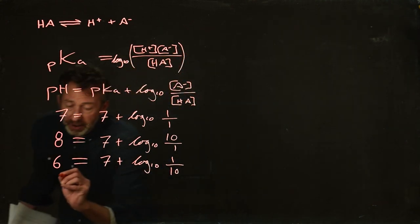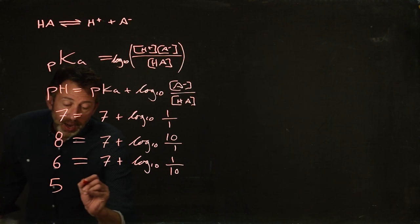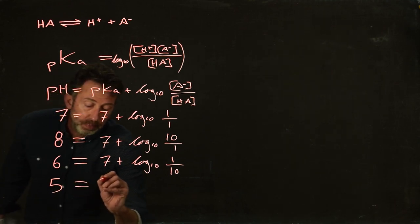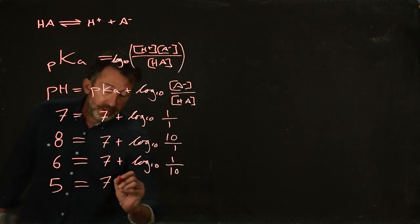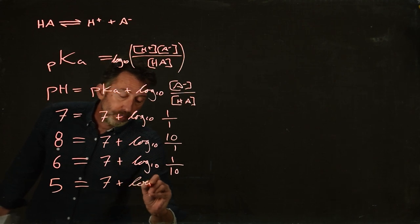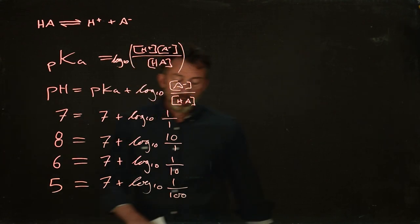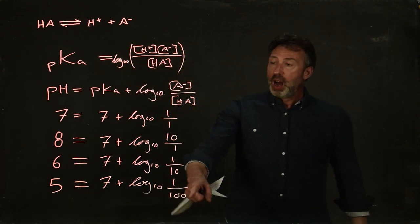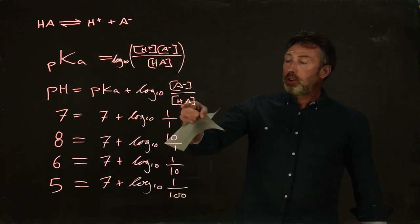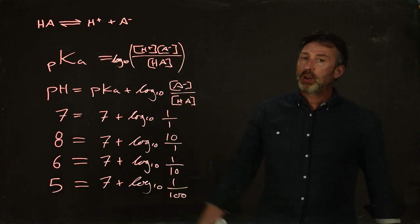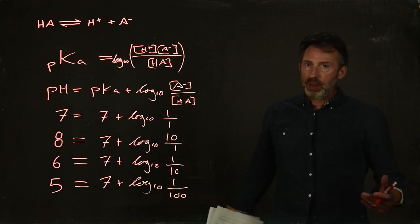And if we went even further than that, if we dropped the pH down to 5 and we used a buffer with a pKa of 7, well, that's going to mean that this log 10 term here is 1 over 100. So there's 100 times more of this form of the conjugate acid than there is of the conjugate base. So there's very little of the conjugate base.